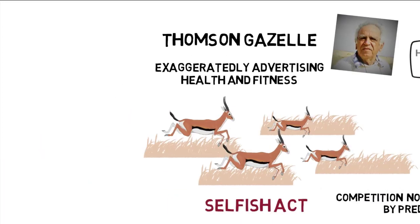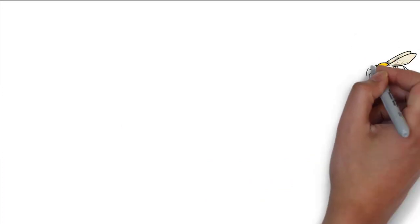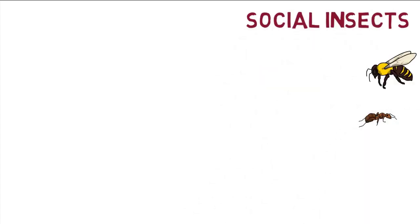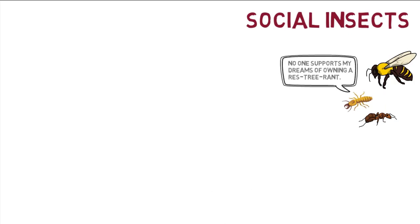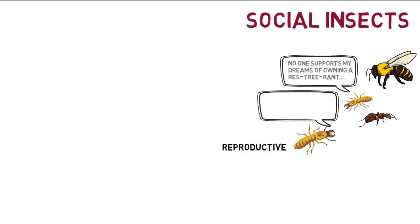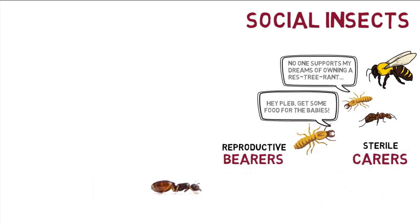Dawkins explains the behavior of kamikaze bees who sting honey raiders but die in the process. Social animals such as bees, ants, and termites do not live as true individuals because the germline is passed down through a minority of reproductive individuals — the queens and drones — while most workers, the self-sacrificing individuals, are sterile. Individuality is achieved at a higher level: the population can be divided into bearers and carers, which can be evolutionarily stable because they are close kin.